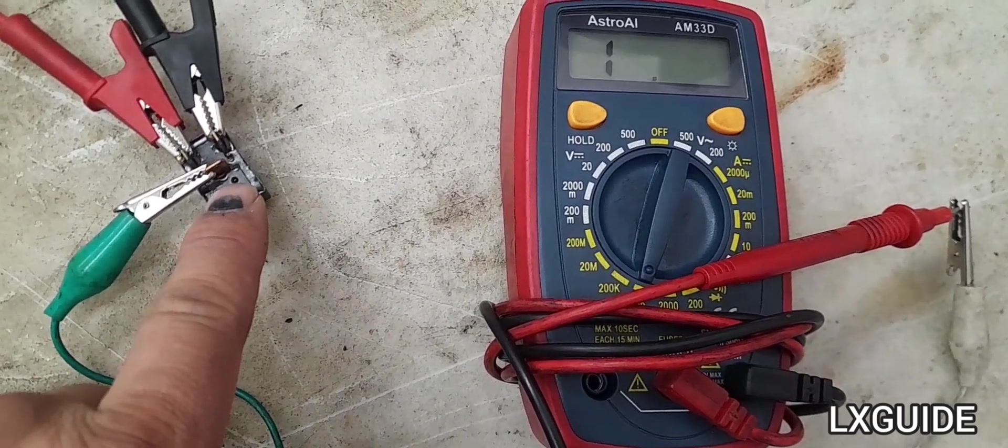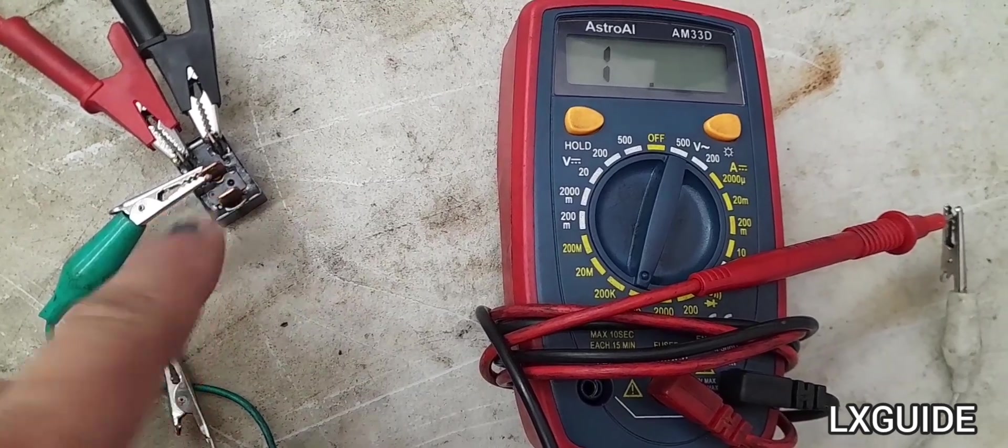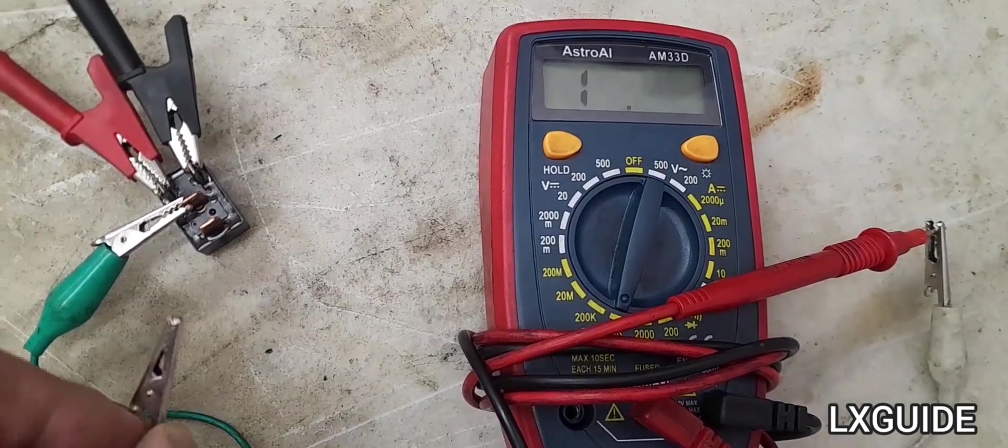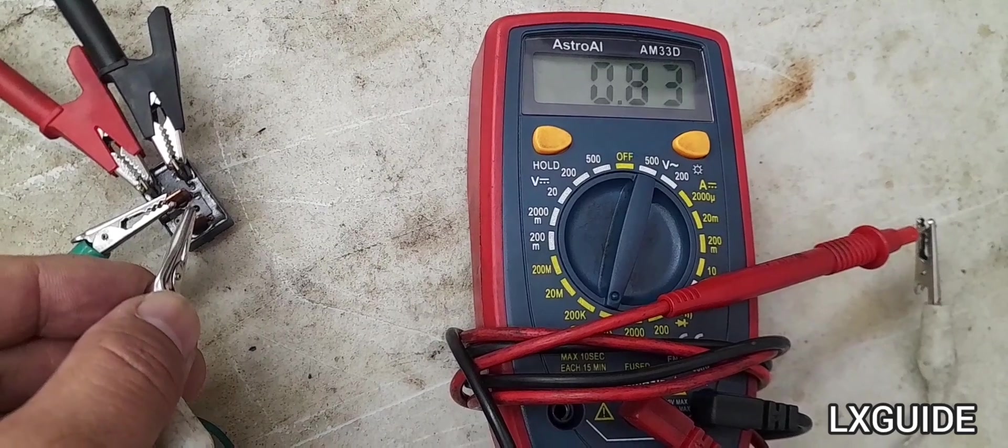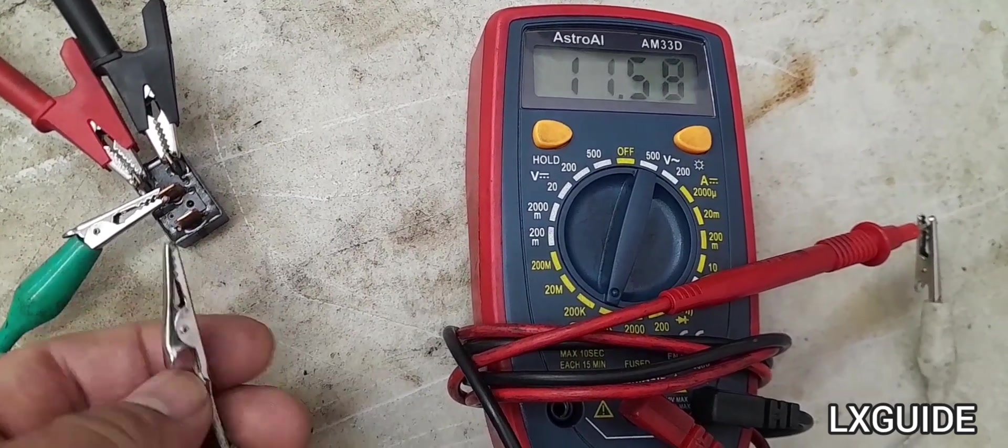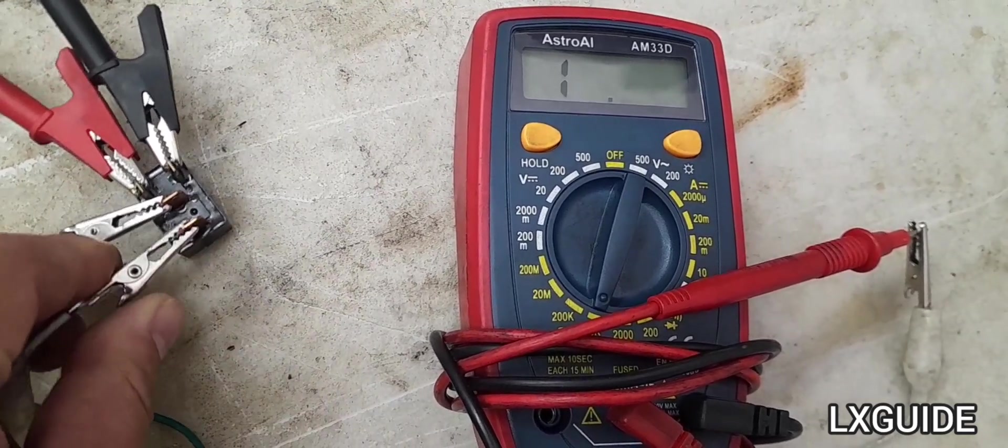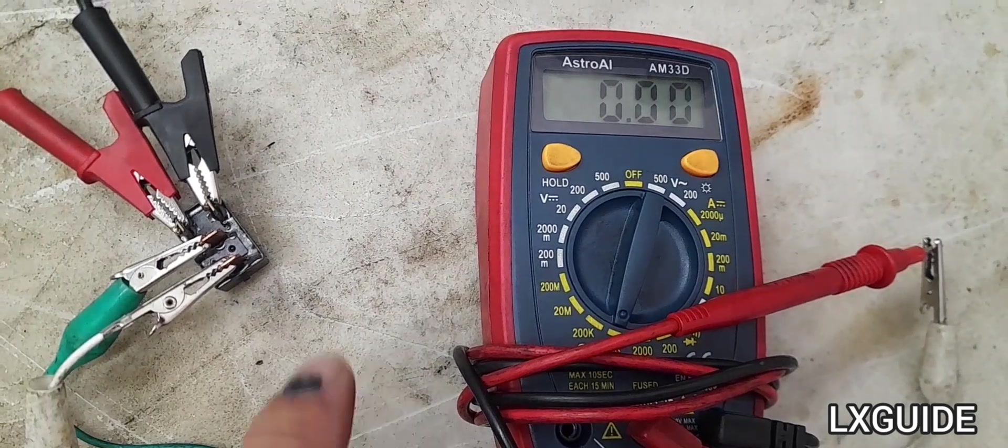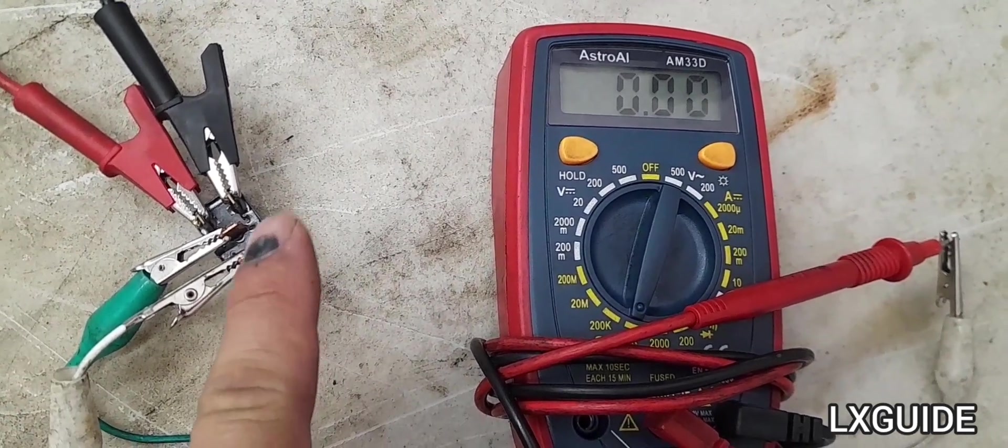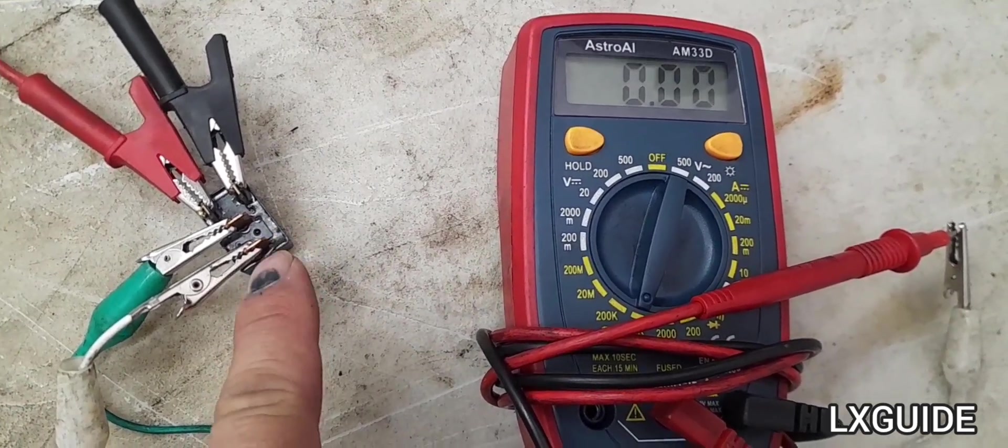This means there should be continuity between pin 87 and 30, so this relay is good and functioning properly.